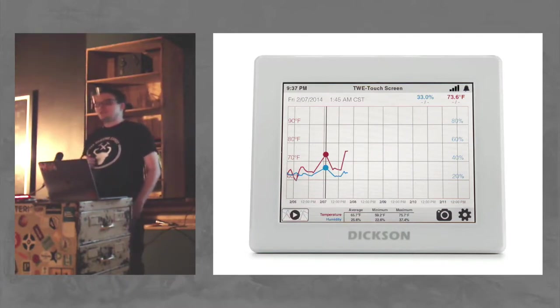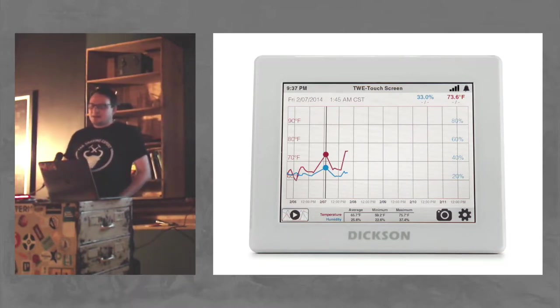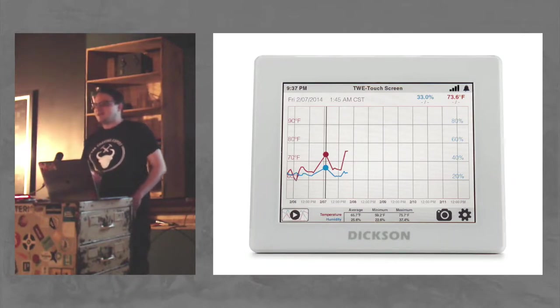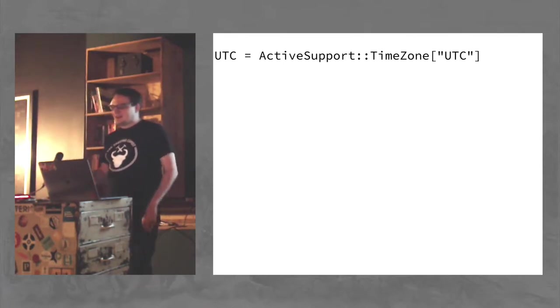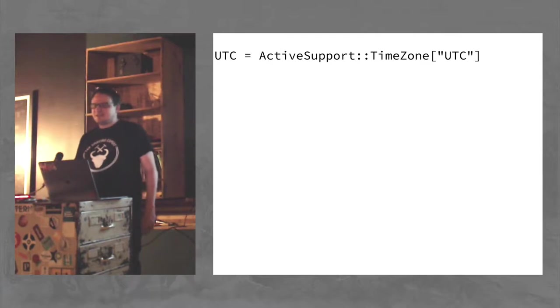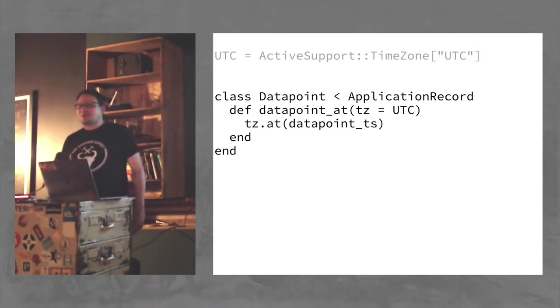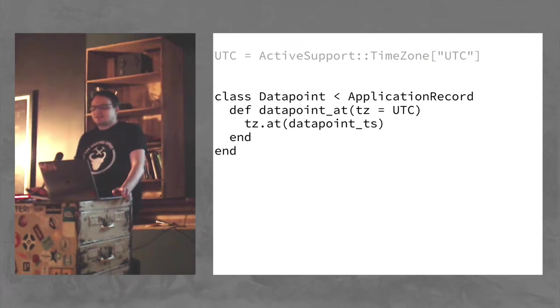So the code I'm going to show you is not really from this project, but it's a pretty good example of code from this project. This is written years later, kind of just from memory. So it's a little bit contrived in that way, but it is representative of real code. Just to start out with, there's going to be this constant throughout all these examples, UTC. It's just the active support time zone for UTC.